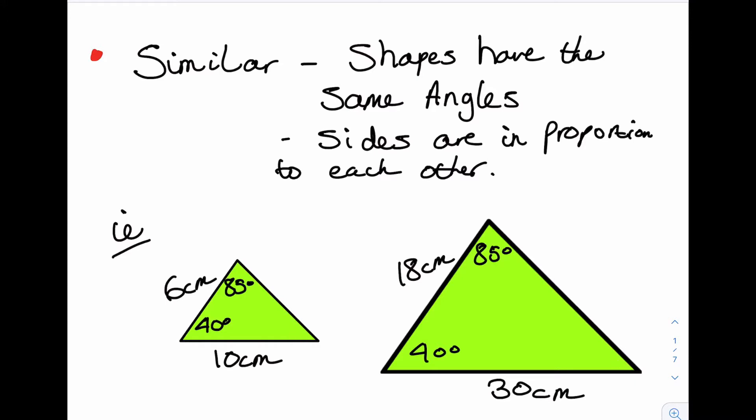So that means that they are similar. So then we can look at the sides. One is 6 and another is 18. 6 times 3 is 18. So the proportions should be the same for the bottom. 10 times 3 is 30. If the sides don't multiply by the same number each time, then they're not similar.